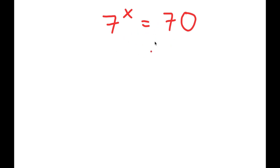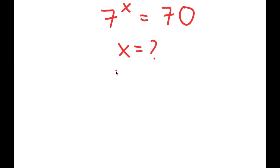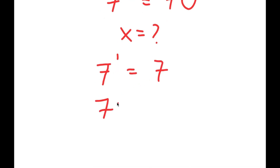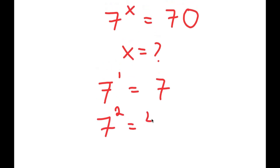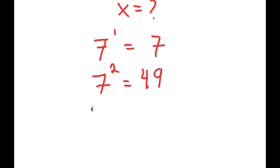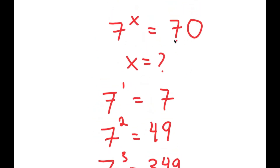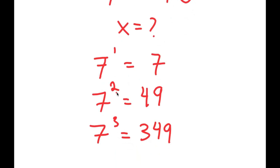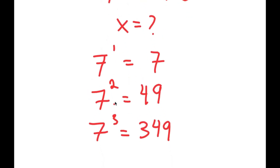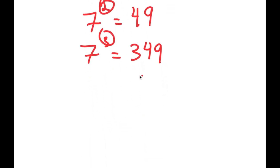Before we start on our solution, let's notice that this is an exponential equation and x is the exponent — the variable we're solving for. Let's try plugging in some numbers. 7 to the power of 1 is 7. 7 to the power of 2 is 49. 7 to the power of 3 is 343. We're trying to find what power of 7 equals 70, but x=3 gives a number much higher than 70, meaning x is going to be a decimal somewhere between 2 and 3.